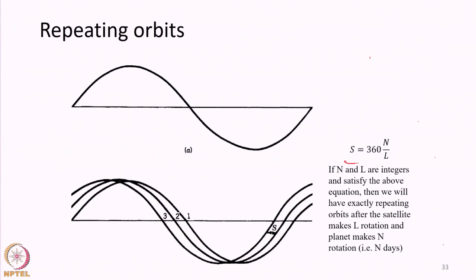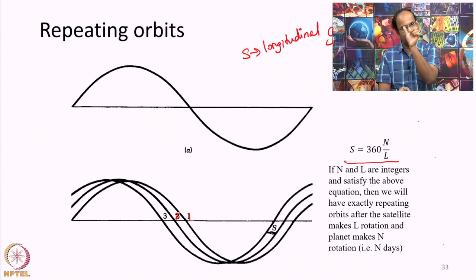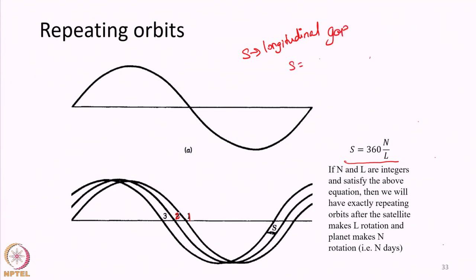This orbital repeativity is achieved under certain conditions. The criteria is given by S = 360·N/L, where S is the longitudinal gap between two orbits on any given day. The longitudinal shift should equal 360 degrees times N over L, where N is the number of days and L is the number of orbits.